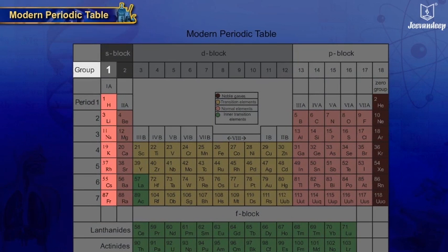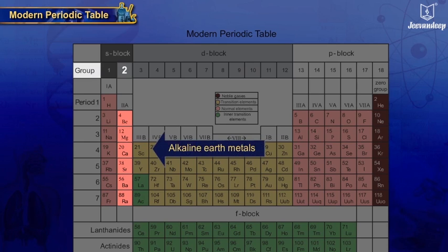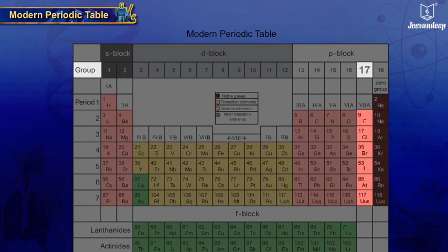First group elements are known as alkali metals. Second group elements are alkaline earth metals. Group 17 elements are halogens.